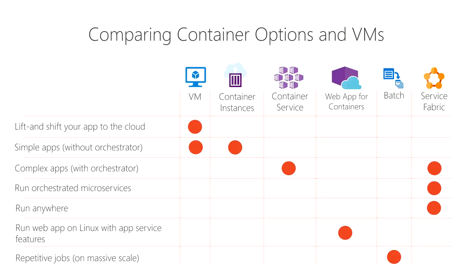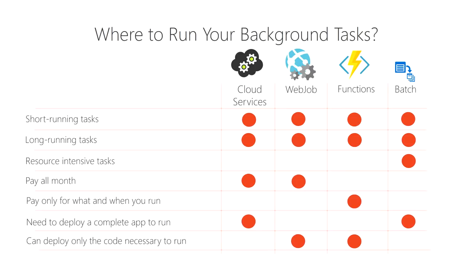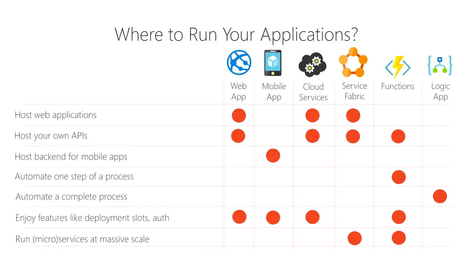I'll then compare all the features of the remaining Azure services to my specific requirements, using tables that compare one category to another rather than one big table of all Azure services. For instance: one table for container options and VMs, one for background tasks (which is probably what I need), and one for running your application in Azure overall. That's my process for choosing how to run an application in Azure.